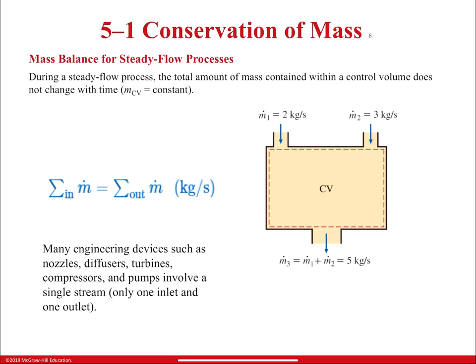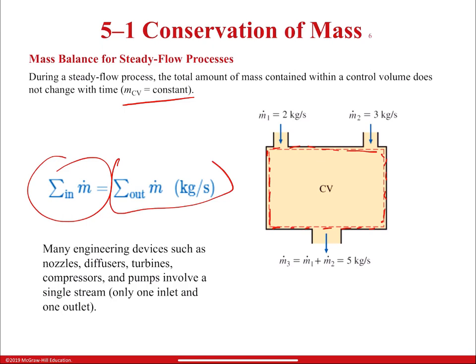Mass balance for steady flow processes: during a steady flow process, the total amount of mass contained within a control volume does not change with time — mass always remains constant. The control volume is defined by the boundary. So the sum of all mass coming in will be equal to the sum of mass coming out. Many engineering devices such as nozzle diffusers, turbines, compressors, and pumps always work through this same principle.